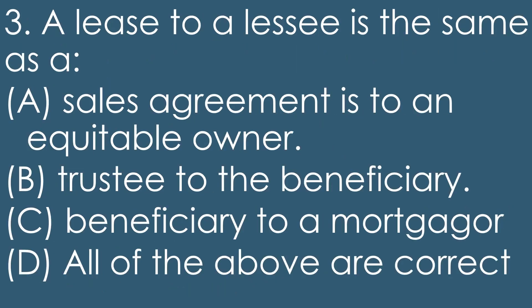Question three: a lease to a lessee is the same as — A, a sales agreement is to an equitable owner; B, trustee to the beneficiary; C, beneficiary to a mortgagor; D, all of the above are correct.